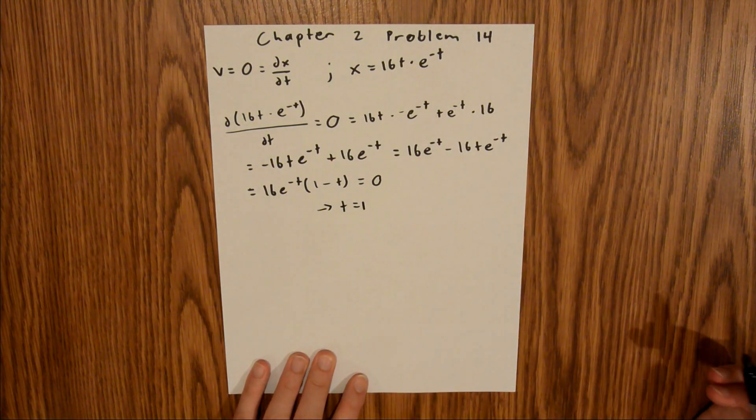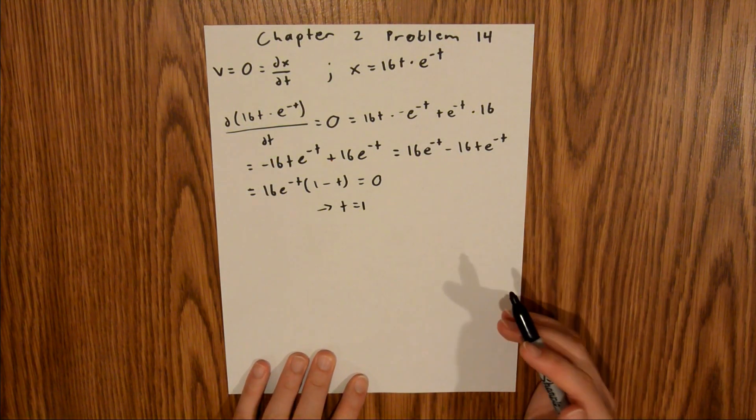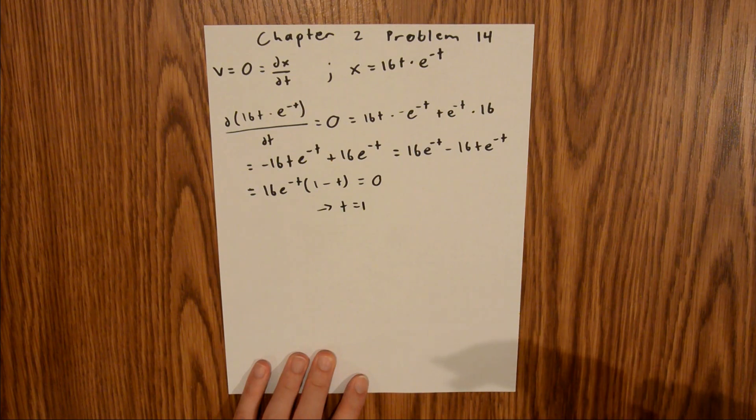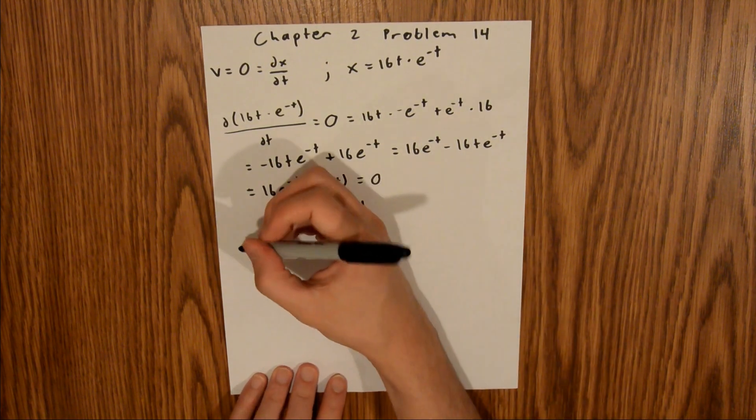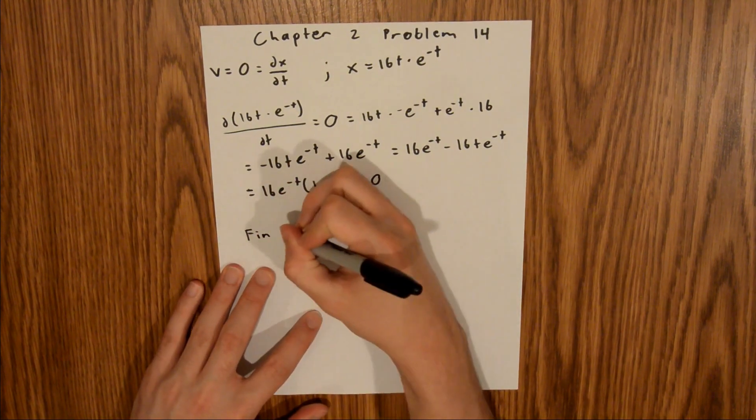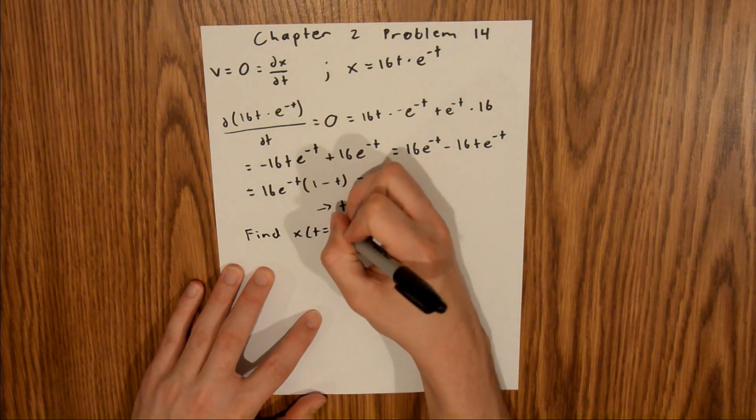Now what we're asked to find is the position of the electron when the velocity is equal to 0. We just found that that is at t equals 1. So now we need to find x at t equals 1.